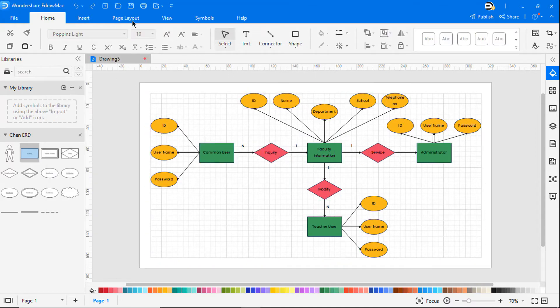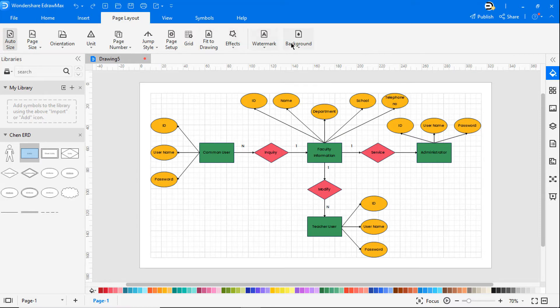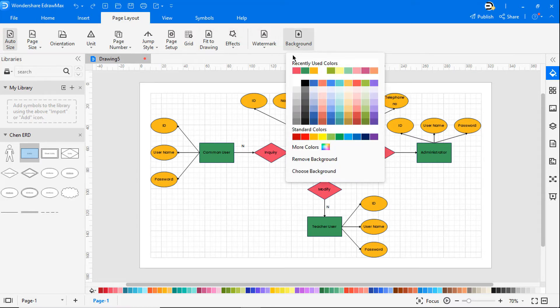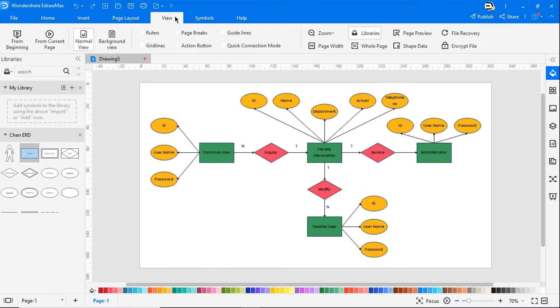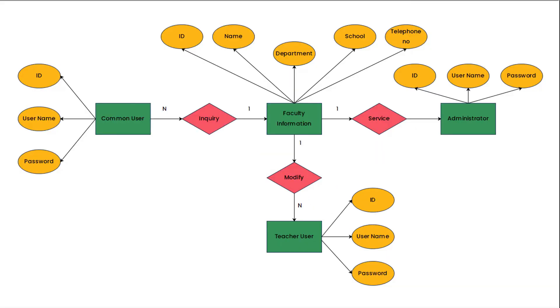Navigate to Page Layout and click on Background. Choose the white color as the background. Click on the View tab and choose the From Current Page feature to view the diagram in presentation mode.